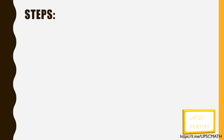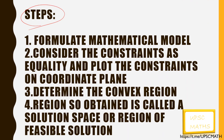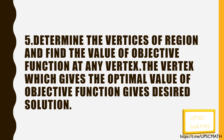We will be following some standard steps in this method. First, formulate the mathematical model. Then consider the given constraints as equality and plot the constraints on the coordinate plane. Then determine the convex region — the region so obtained is called the solution space or the region of feasible solution. Then determine the vertices of the region and find the value of the objective function at each vertex. The vertex which gives the optimal value gives the desired solution.